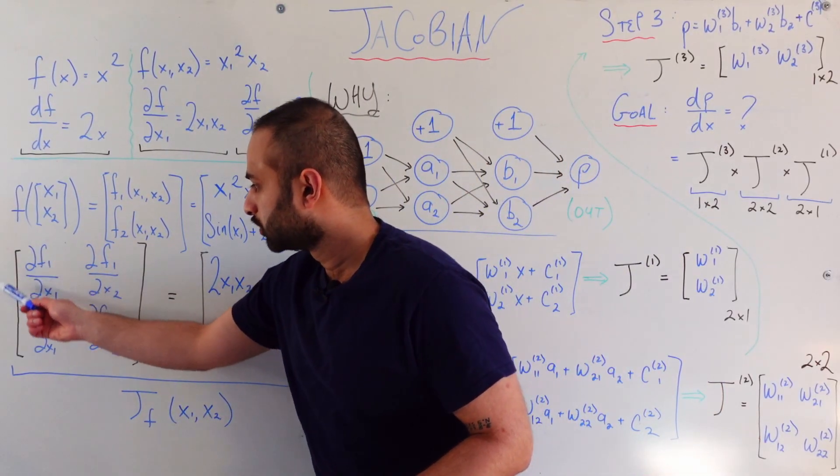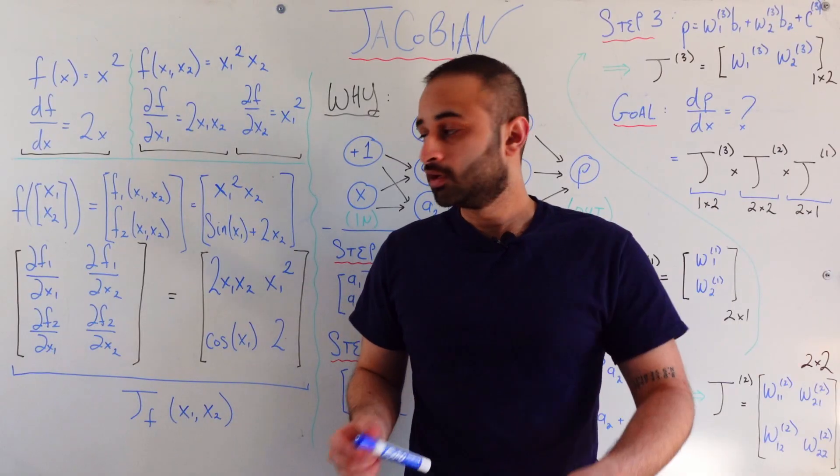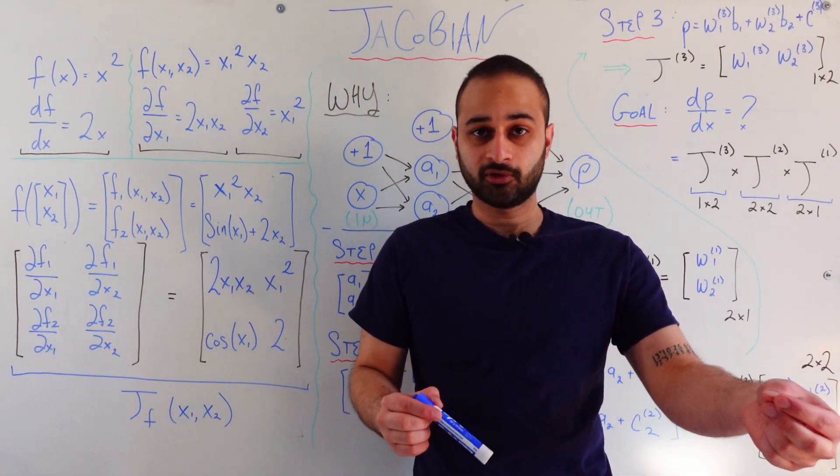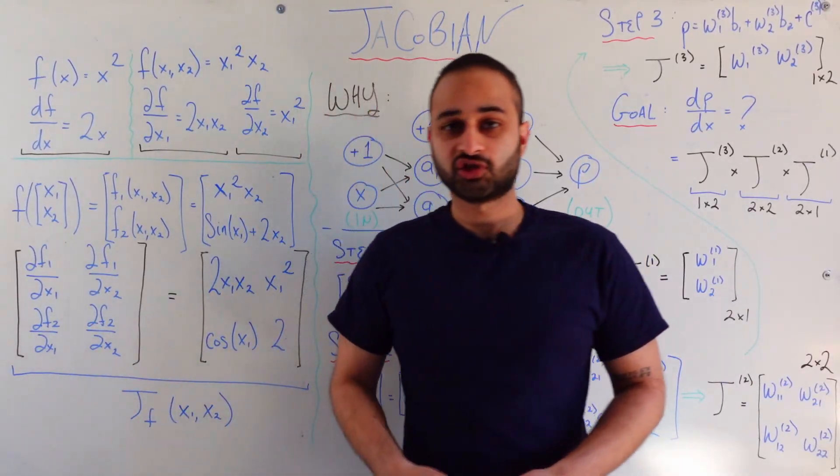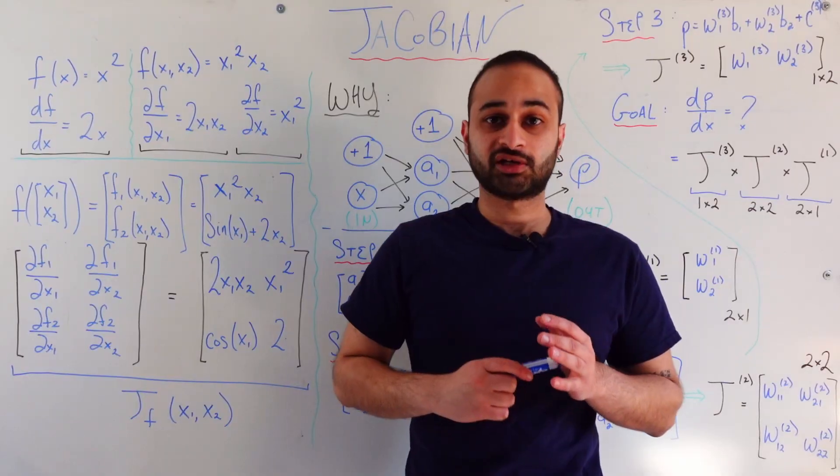So explicitly we have the partial of the first function, this guy, with respect to the first variable. The partial of the first function with respect to the second variable. The partial of the second function with respect to the first variable. And the partial of the second function with respect to the second variable.